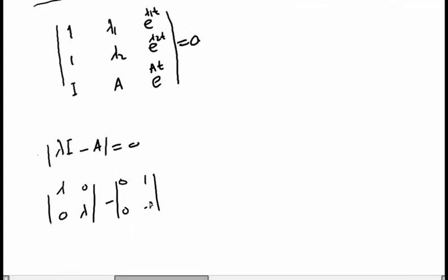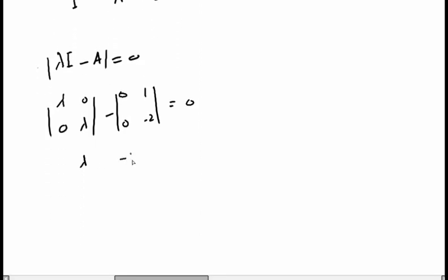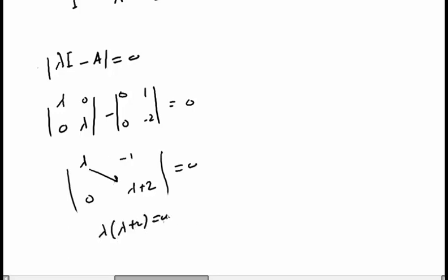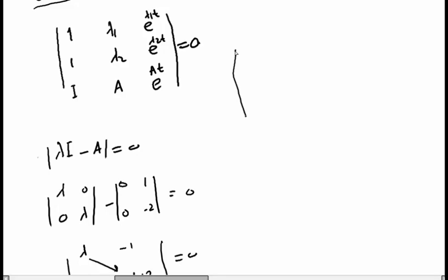So we get (λ−0)(λ+2) − (0)(−1) = 0, which simplifies to λ(λ+2) = 0. This gives us two eigenvalues: λ₁ = 0 and λ₂ = −2 — distinct eigenvalues. Now we go back and substitute all these values into the Sylvester interpolation formula.